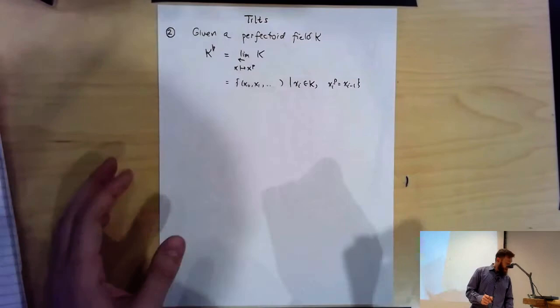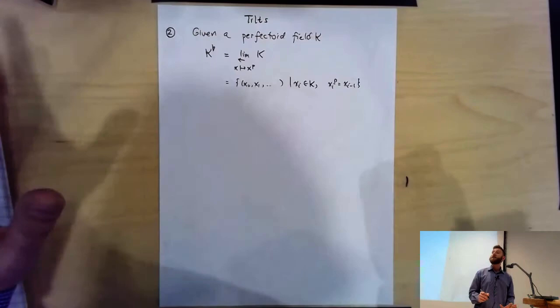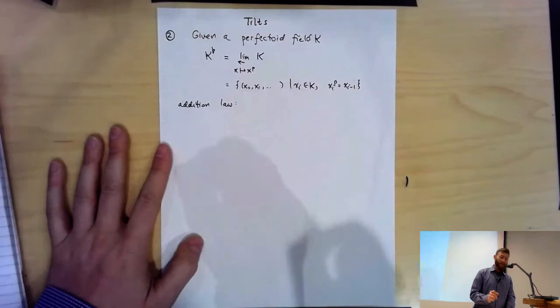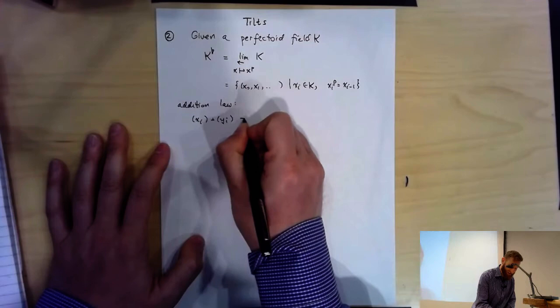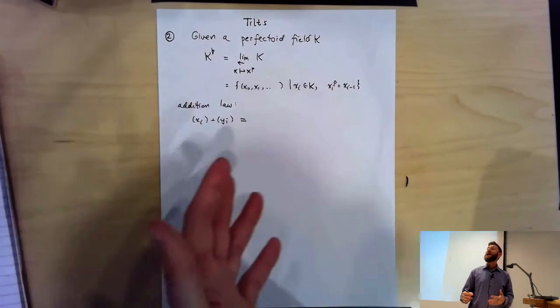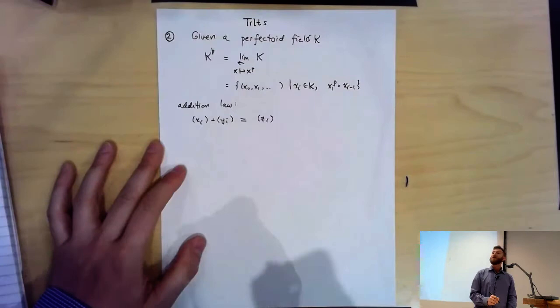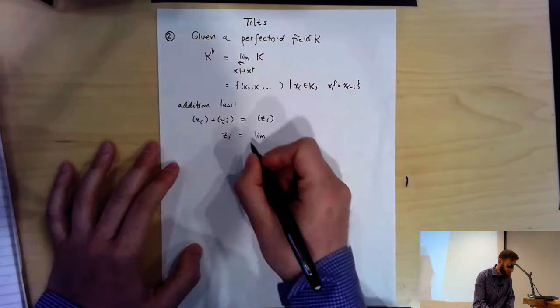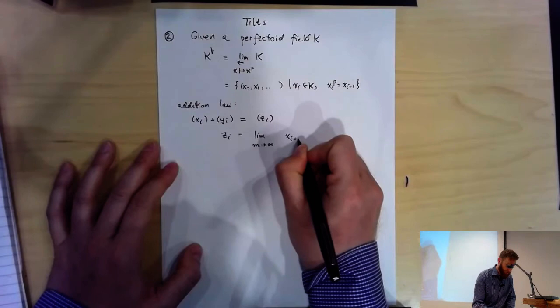Just a multiplicative monoid — but if K is a perfectoid field, you can actually turn this into a ring by supplying an addition law. To add two elements (X_i) and (Y_i), I need to produce Z_i defined as a limit: Z_i equals the limit as M goes to infinity of (X_{i+M} + Y_{i+M})^{P^M}. It's a fun exercise to show this converges — the basic idea is that raising to a P-th power makes congruences stronger modulo P.